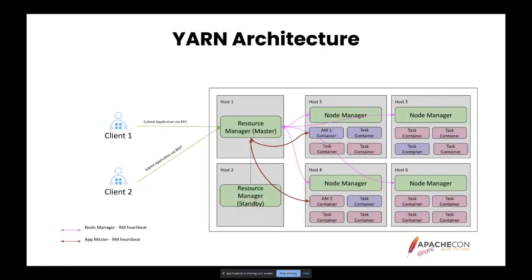A container is a concept in YARN — it is basically a request to hold resources on a cluster. When the client starts an application, it begins to talk to the resource manager. The resource manager makes a single container request on behalf of that application; this will be the application master's container. The application master starts running in that container and submits subsequent requests to the resource manager. These containers will be allocated to run tasks for that application. Once all tasks are finished, the application master will be shut down and the last container will be deallocated from the cluster.